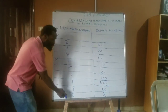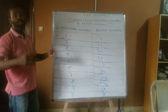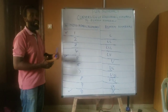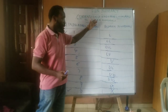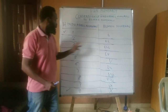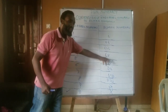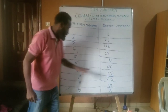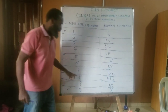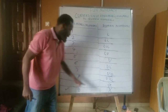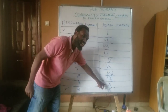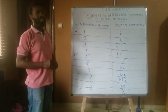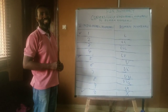Now we've looked at 1 to 10 in Indo-Arabic numbers and the Roman numerals the Roman Empire brought to us. So: 1 is I, 2 is II, 3 is III, 4 is one before 5 which is IV, 5 is V, 6 is VI, 7 is VII, 8 is V and 3 which is VIII, 9 is one number before X which is IX, and 10 is X. I believe we've learnt a lot today from number 1 to 10. Hope to see you next week. Bye!